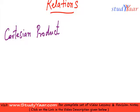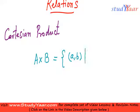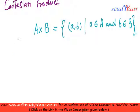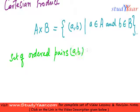Let us define what a Cartesian product is. We represent a Cartesian product by A cross B. It is known as the Cartesian product of A and B, and it is the set of ordered pairs (a, b), where a belongs to A and b belongs to B.